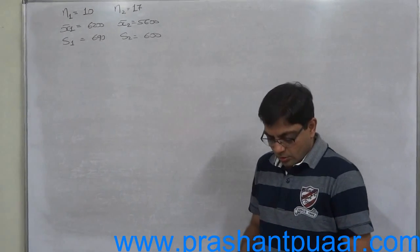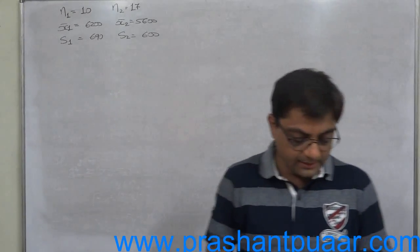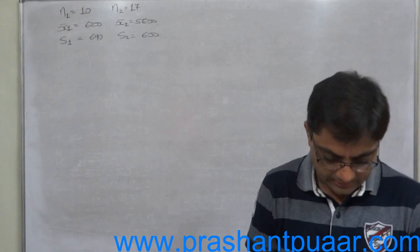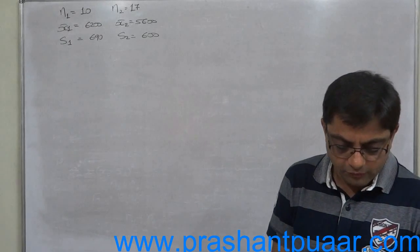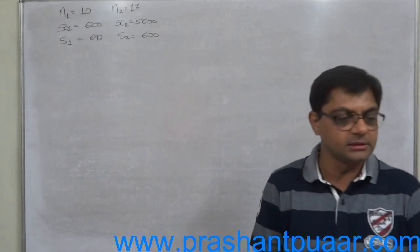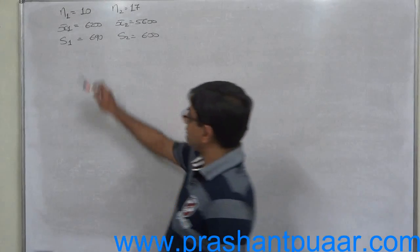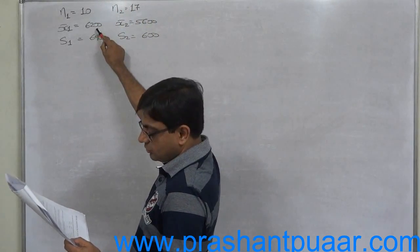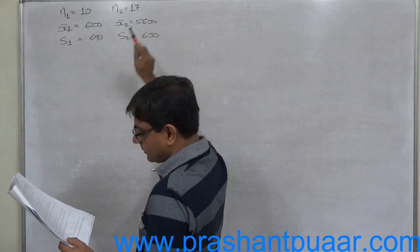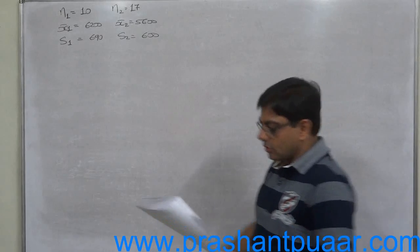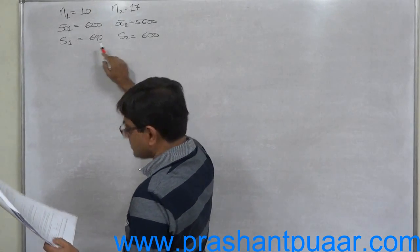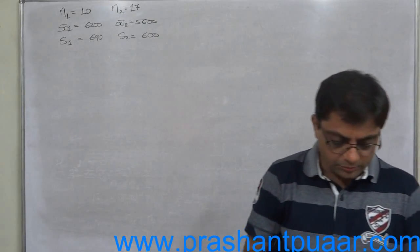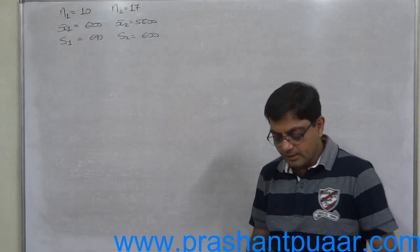The next case: of the two salesmen, X claims that he has made larger sales than Y for the accounts examined which were comparable for two salesmen. The results were as follows: number of sales by X is 10 and by Y is 17, average size of sales by X is 6200 kilograms and by Y 5600 kilograms, standard deviation of X is 690 kilograms and that of Y is 600 kilograms. Do these two average sizes of sales figures differ significantly? Explain your answer.